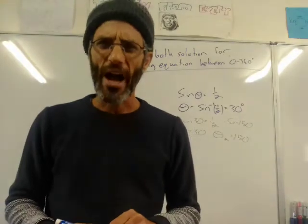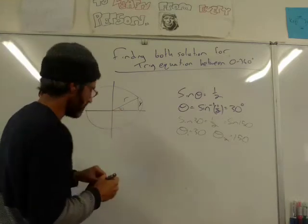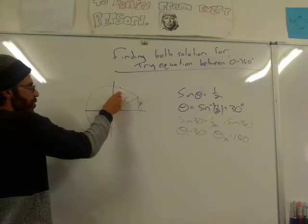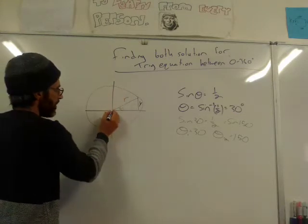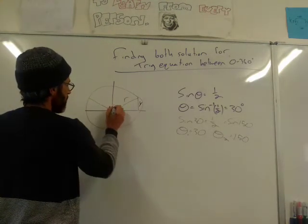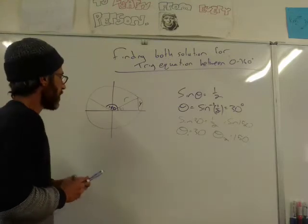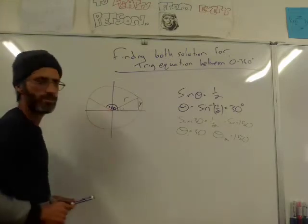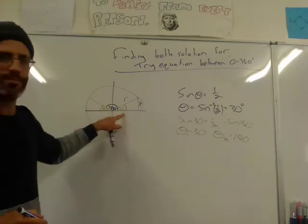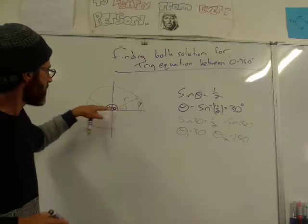Now let's try and understand why we're actually getting two solutions. What is 150? If this is 30 — I'm moving the radius here — that's 30, moving it more, that's 90. 150 is going to be somewhere like this. We're going to write that as 150 — this is 150, from the x-axis to here. Now if this is 150, what will this other angle be? Correct — that will be 30. So in other words, these two angles are the same.